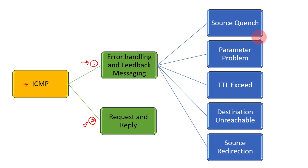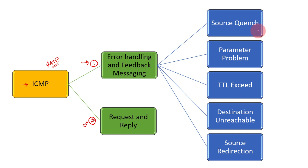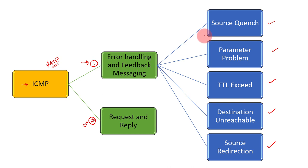This ICMP protocol is very important for your GATE examination, where they ask things in an in-depth manner. The key ICMP error messages we need to discuss are: source quenching, parameter problem, TTL exceed, destination unreachable, and source redirection. These were introduced in the previous video, but now we will discuss all of them in more detail. The first one is source quench.